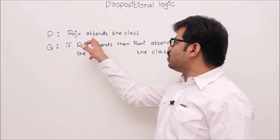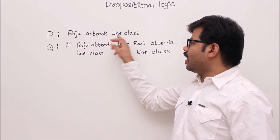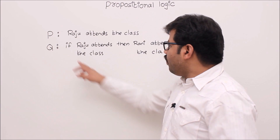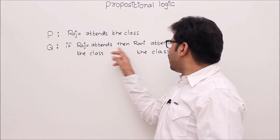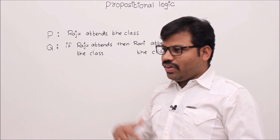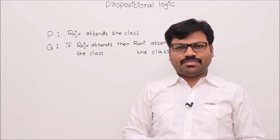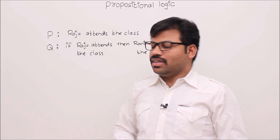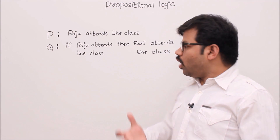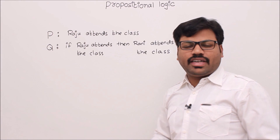Consider two statements. One: Raju always attends the class. Two: if Raju attends the class, then Rani attends the class. By observing these two statements as a human being, what comes to mind? Rani also always attends the class.